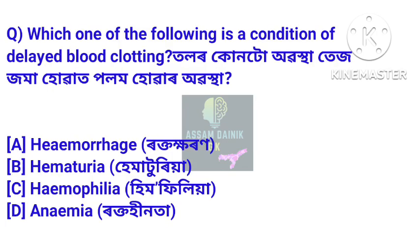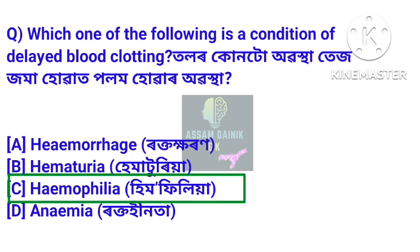Next question: which one of the following is a condition of delayed blood clotting? Tolor kundu abastha tes jama huat polom hua abastha? Answer: Hemophilia. Amar dehor bichudha tes jama huat polom hua abastha tuk hemophilia buli kwa hai.